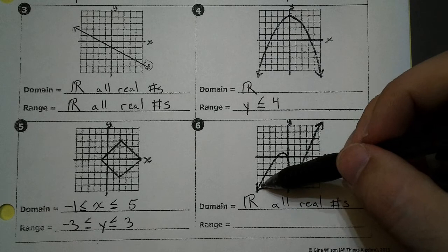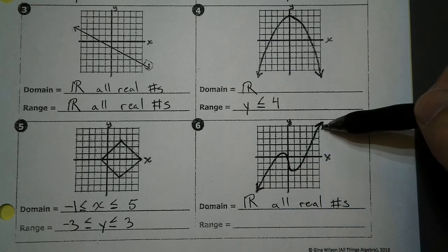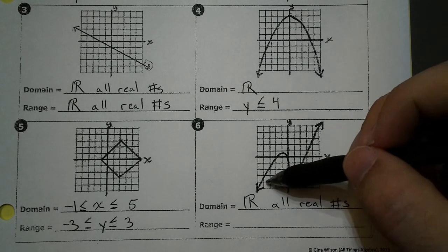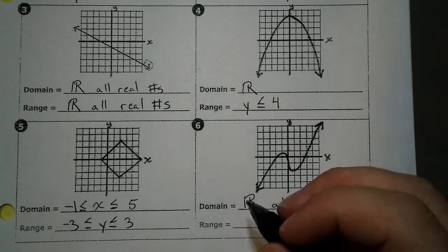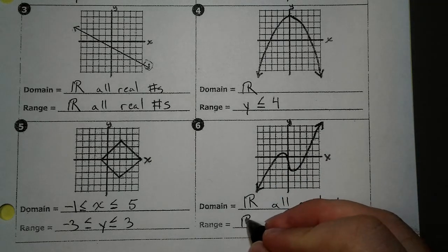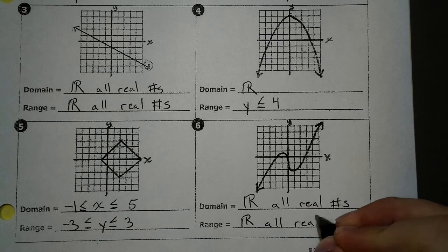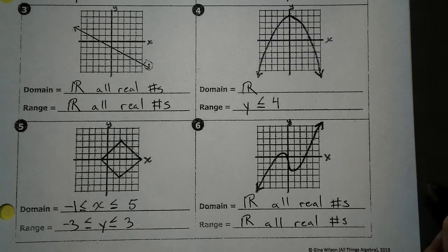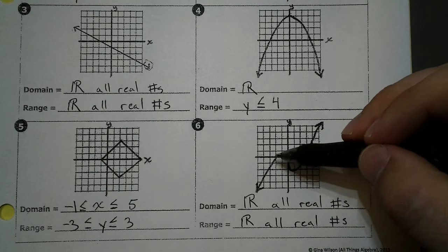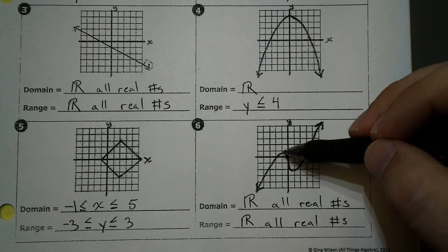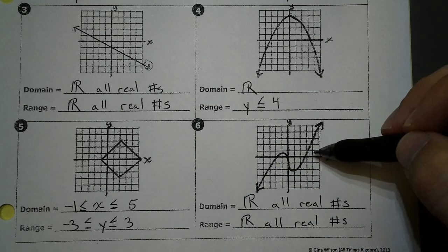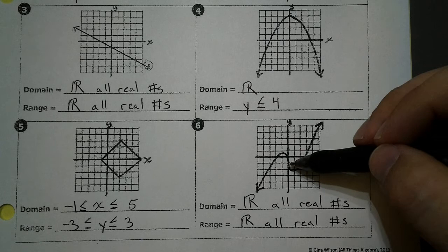Now for our range, at the bottom, I've got an arrow. At the top, I've got an arrow. So it's continuing going down forever and up forever. This one is all real numbers. Now I know there's a squiggly, and it looks like it would stop right here, but we still have the values over here going up. And same thing down here.